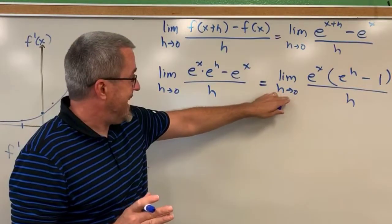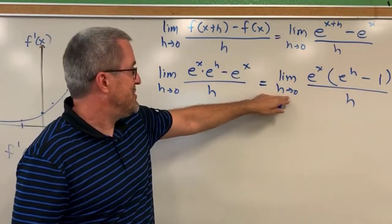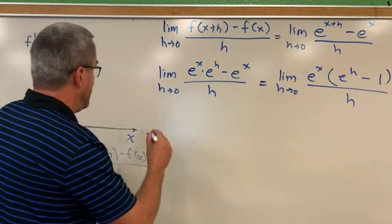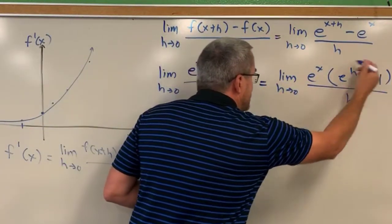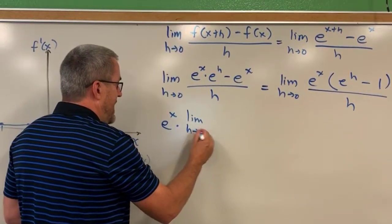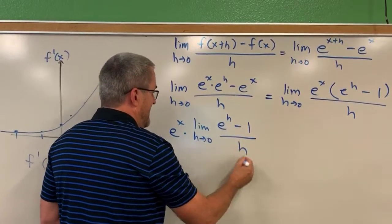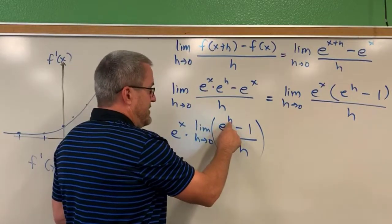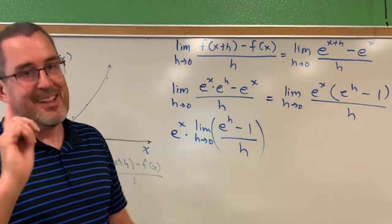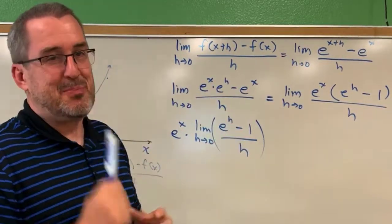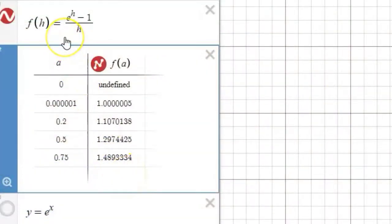Now, that e to the x factor is not impacted by the limit as h goes to 0, so the limit property allows us to pull that e to the x out. We now examine the limit as h approaches 0 of e to the h minus 1 all over h. Again, if we erroneously substitute 0 in for h, e to the 0 is 1, 1 minus 1 is 0, divided by 0 — we still have 0 over 0. That's not how we think about limits. We want to think about what happens as h gets really close to 0. So we're going to pause here, go back to Desmos, and explore that limit.